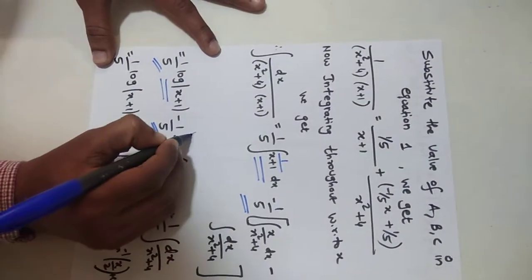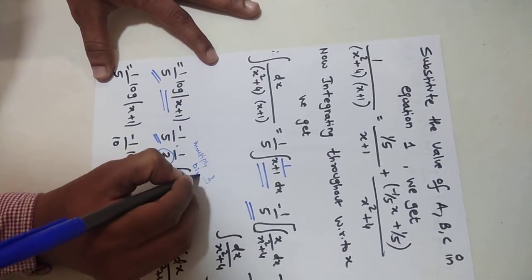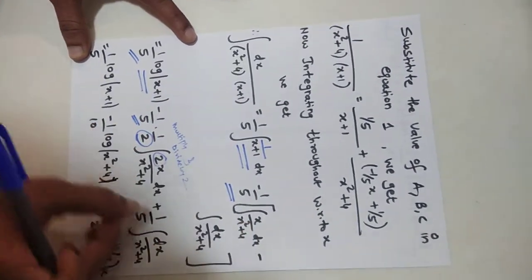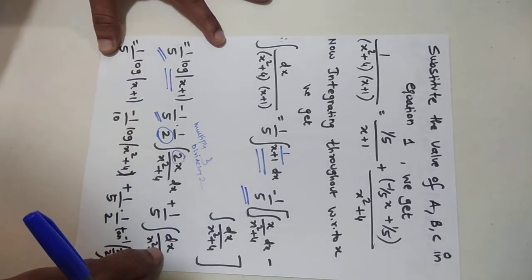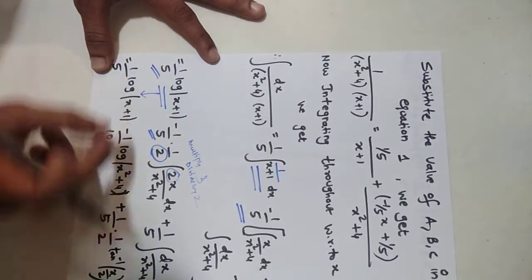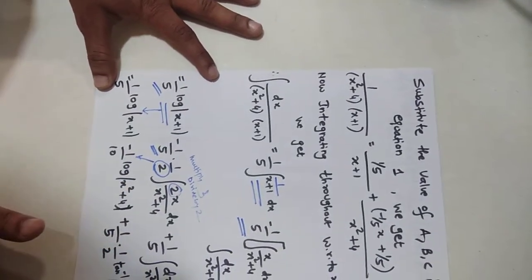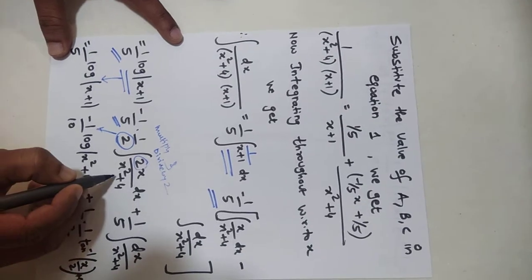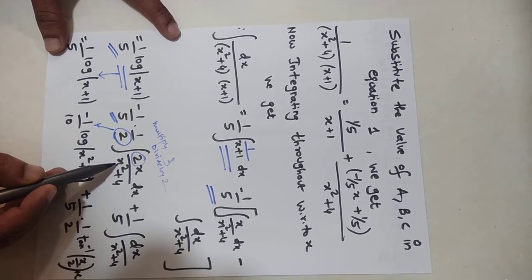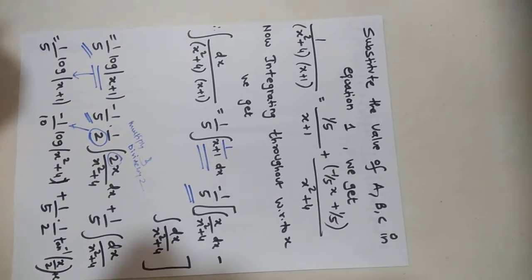Multiply and divide by 2 — this is the adjustment method. So 1/5 remains, and 1/(5 × 2) gives 1/10. We now have the term involving 2x/(x² + 4), and if we differentiate x² + 4 we get 2x, which confirms the adjustment.